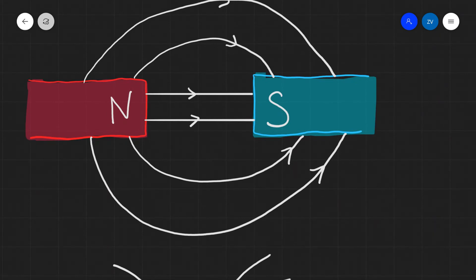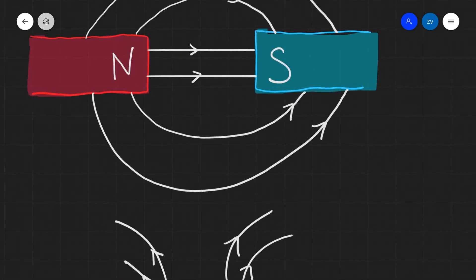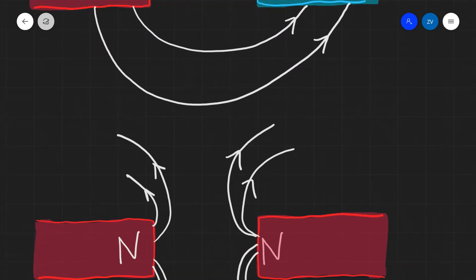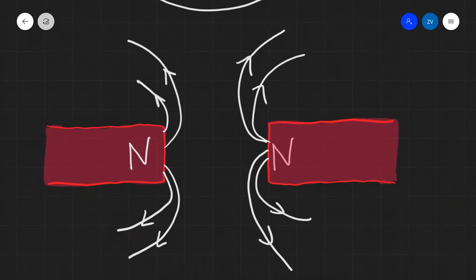If I had two poles of the same kind—for instance, two north poles—the field lines will appear to look like this.